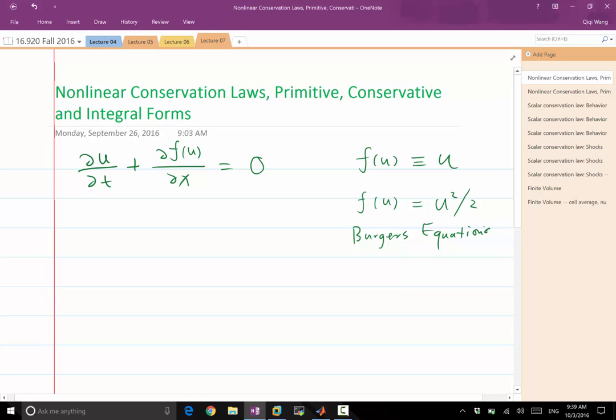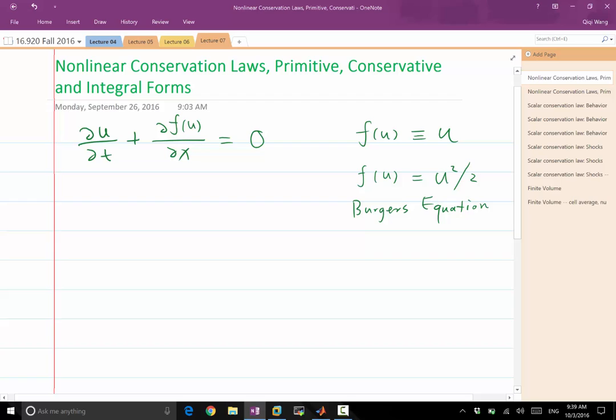So the Burgers equation is really a prototypical nonlinear conservation law that is very, very simple. It has the simplest form of nonlinearity, just a square. If you remove the square, it'll be just a linear advection equation, what we've discussed before, something that works perfectly with finite difference. And now with the square, we see things start to break down with finite difference.